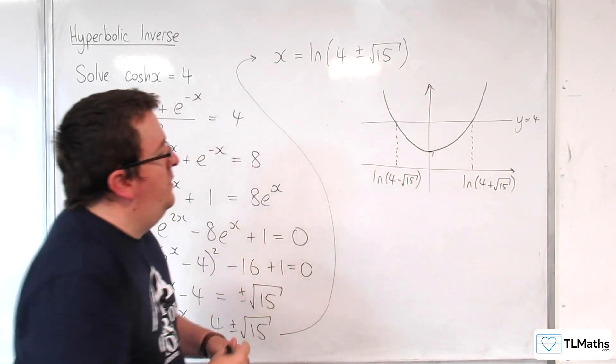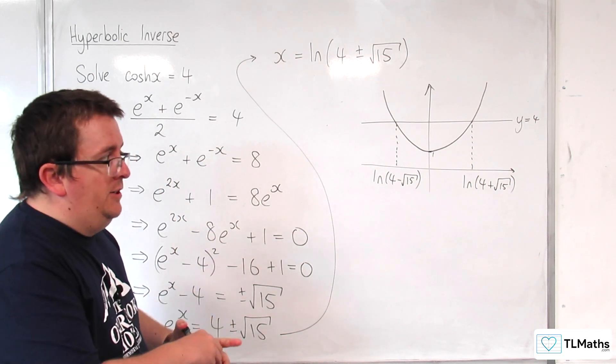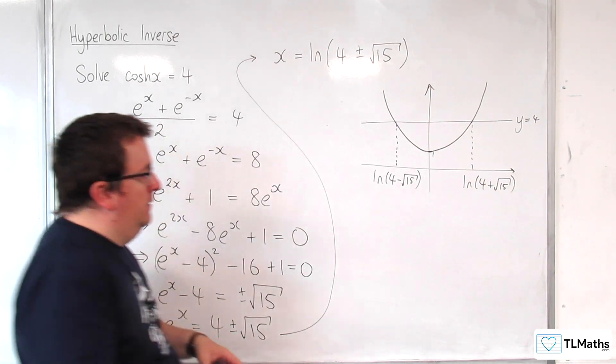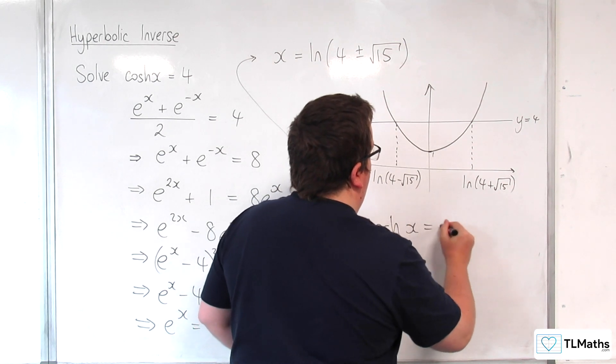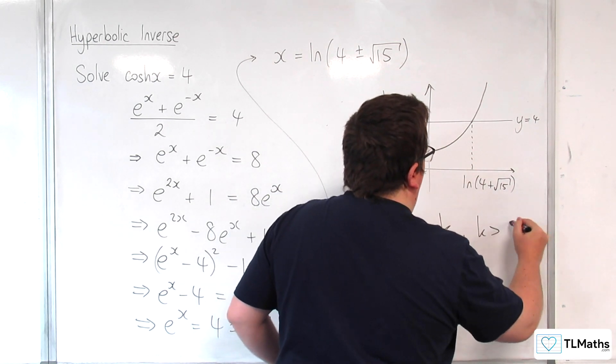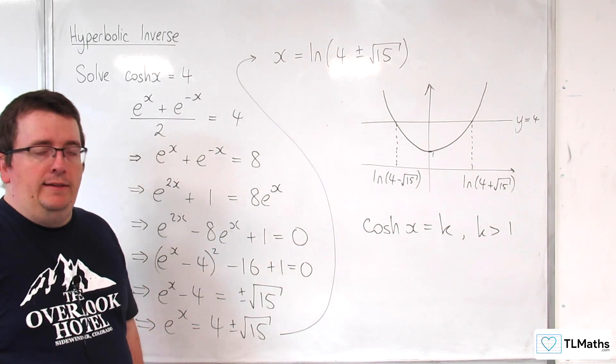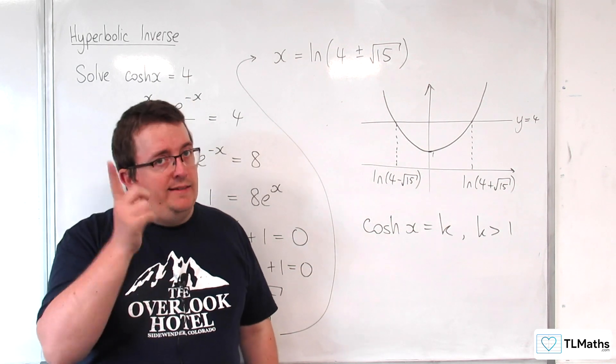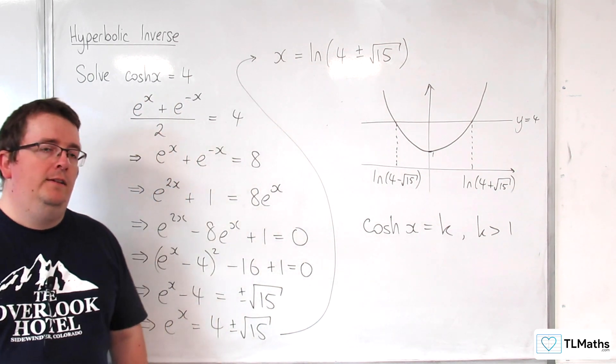So this is the important point here, that the two results that you get from solving an equation like cosh x equals k. So if you're solving cosh of x is equal to k, where k is greater than 1, then the two solutions that you get for x will be the negative of one another. Okay? So keep that in mind for the next video. Thank you.